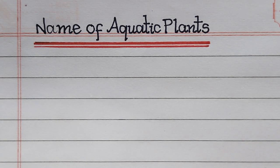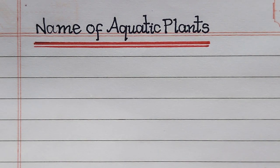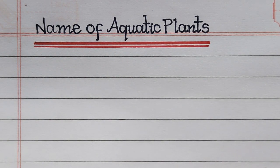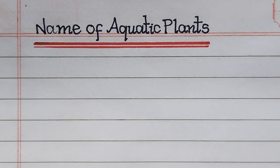Hello everyone, welcome to my channel. Aquatic plants are those which live and grow in water. They are found in all types of water. Aquatic plants are also called hydrophytic plants. In this video, I will write 20 aquatic plant names. Let's get into the video.